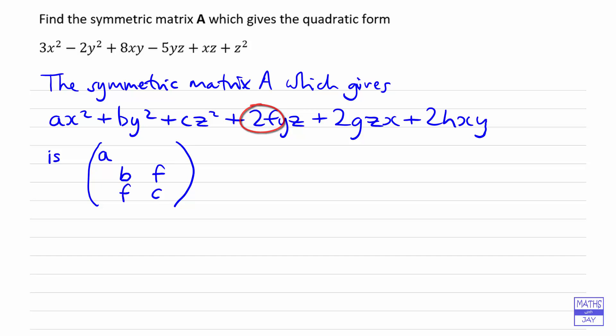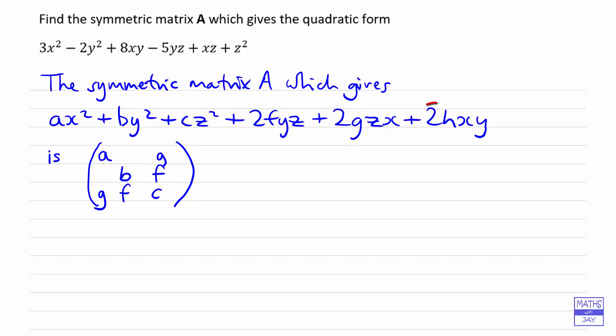One f goes here and one there. Similarly, when we're looking at xz, that coefficient goes here and here, and the coefficient of xy will be there and there. In each case we've got 2f, 2g, 2h total, but one part in each off-diagonal position of the matrix. Similarly for g and h.